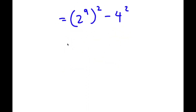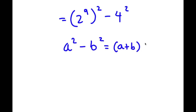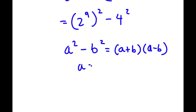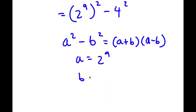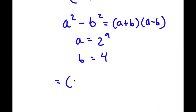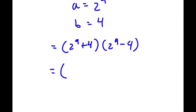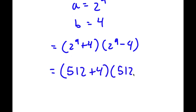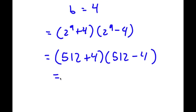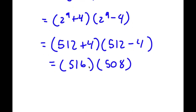Using the difference of squares rule — a squared minus b squared equals (a plus b)(a minus b) — I can think of a as 2 to the power of 9 and b as 4. So now I have (2 to the power of 9 plus 4) times (2 to the power of 9 minus 4). Since 2 to the power of 9 equals 512, I have (512 plus 4) times (512 minus 4), which is 516 times 508.